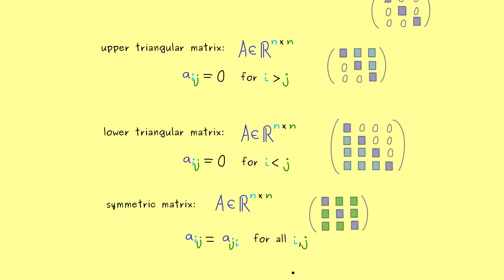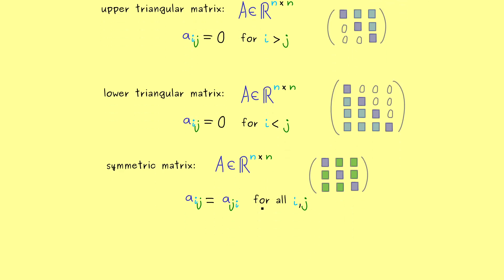In other words for a symmetric matrix it's possible to exchange the index for the row with the index of the column. Therefore you see it's important that we have a square matrix such that the number of rows coincides with the number of columns.